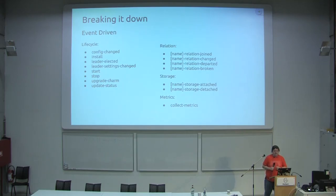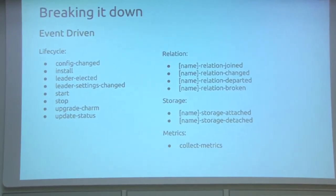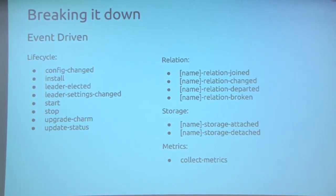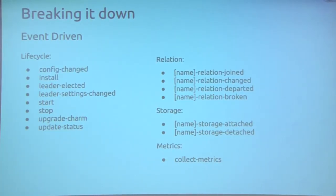We're trying to build these VNFs to be event-driven. Each event must be handled idempotently — so if a configuration changes, it should be the same change across one machine to three machines running that application. Some events will repeat themselves, like after a reboot a config-changed event might happen to make sure that unit is in the same configuration as the rest. Beyond lifecycle management, we also have events to handle integration between an application and another application — two VNFs. This is the database example: you have an event that says okay, I've joined with this application, you ask for what you need, and then another event provides that information. And when that service goes away, it'll tell you the database is going away, you have the option to back up or do whatever you need, and then another event says the relationship is broken.